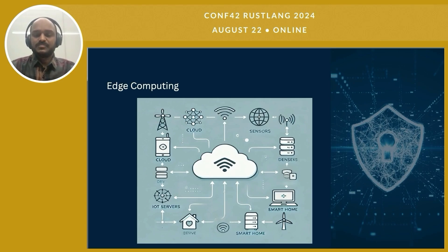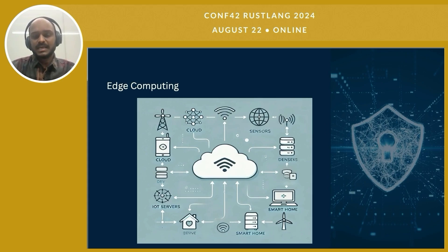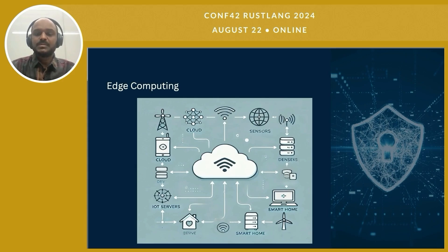This illustrates the fundamental concepts of edge computing — data processing occurs closer to the data sources rather than relying only on centralized cloud data centers. The cloud is at the top, representing the traditional centralized cloud infrastructure. Instead of sending all data directly to the cloud, we have edge devices like IoT sensors and smart home devices that collect and process data locally at the edge of the network. The arrows in the diagram indicate the flow of data: first, data is generated by edge devices and sent to a nearby edge server, which handles processing tasks locally, significantly reducing latency and bandwidth usage. Only the necessary processed data is then sent to the cloud for further analysis or storage.